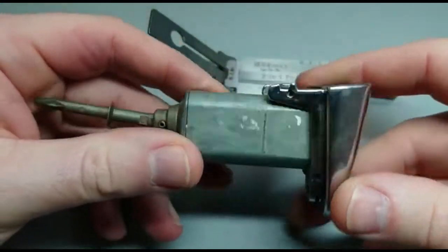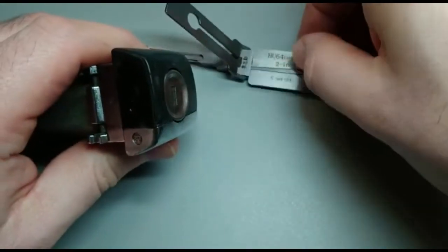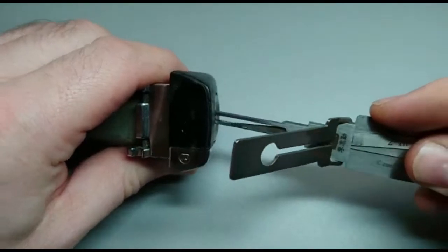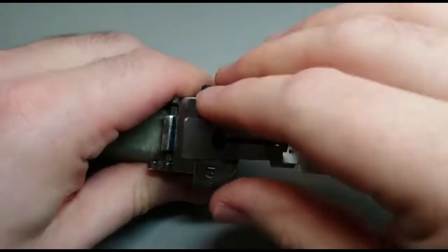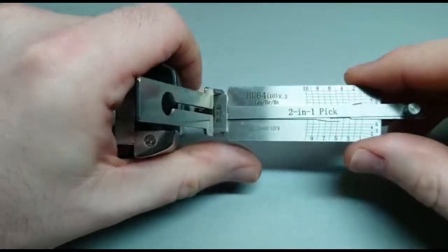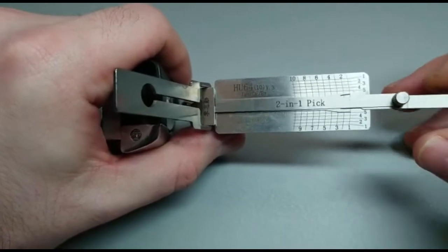This is the HU64 lock. These open Mercedes. Because different locks are on different vehicles sometimes the Lishi Pick will only open one vehicle. Like the HU64 is only really on the Mercedes but it will open all Mercedes from about the year 2000 to the present day.